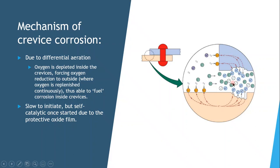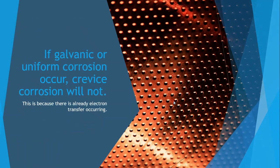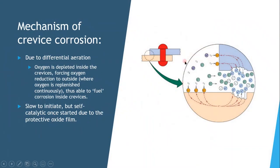Crevice corrosion is very slow to initiate but self-catalytic once started, due to the protective oxide film being attacked inside the crevice and unable to reform due to lack of oxygen. Corrosion inside the crevice makes the outside even more cathodic, further fueling internal corrosion. This makes crevice corrosion difficult to detect since the protective film remains undisturbed on the outside. If galvanic or uniform corrosion is already occurring, crevice corrosion will not, as electron transfer is already underway.